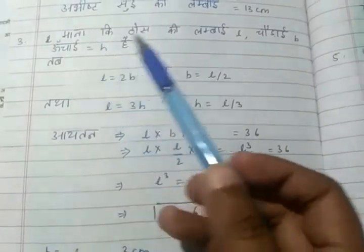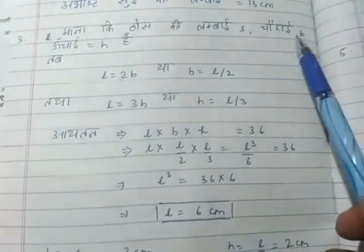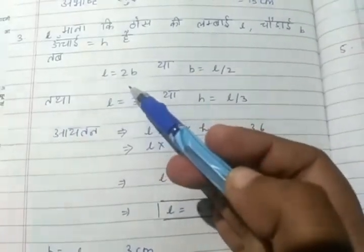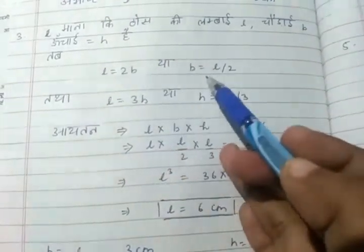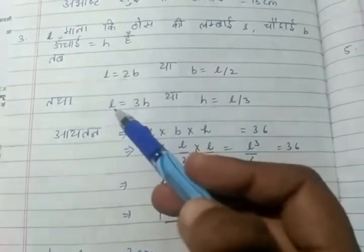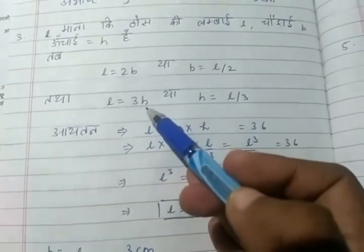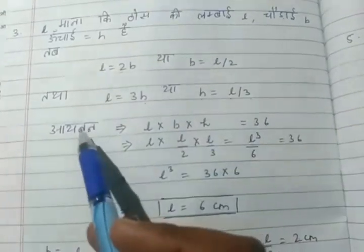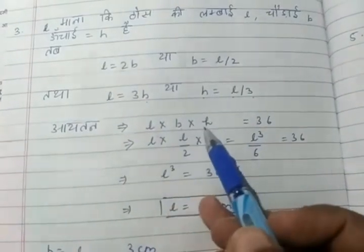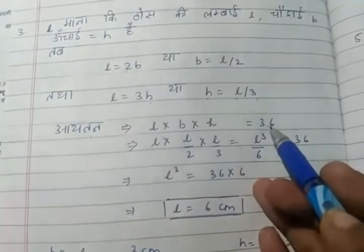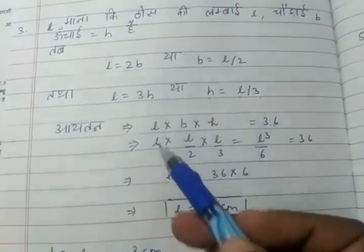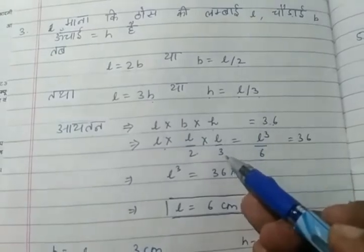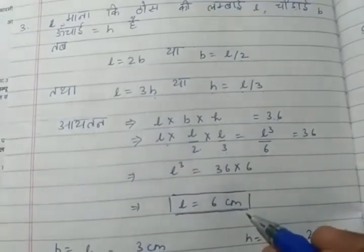We will write that the length, breadth and height are L, B and H. You are given that L is equal to 2B and the height is equal to L/3. Now length × breadth × height is given as 36. The length is L, breadth is L/2 and the height is L/3.